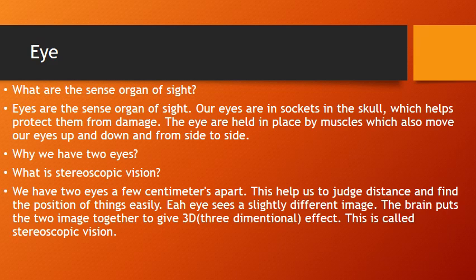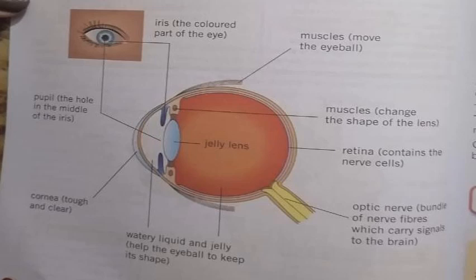Why do we have two eyes, or what is stereoscopic vision? We have two eyes, a few centimeters apart. This helps us judge distance and find the position of things easily. Each eye sees a slightly different image, and the brain puts the two images together to give a 3D — three-dimensional — image effect. This is called stereoscopic vision.